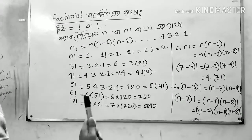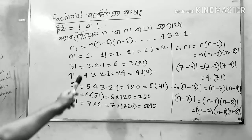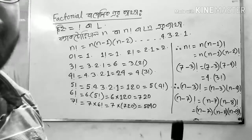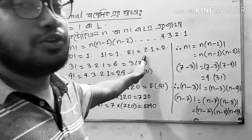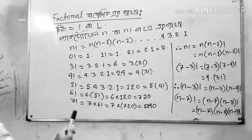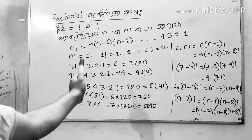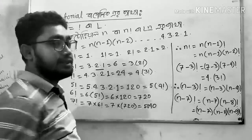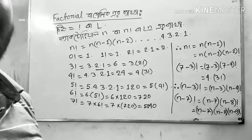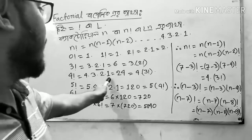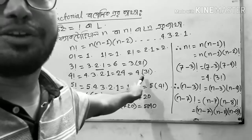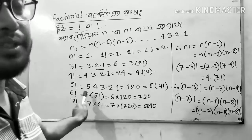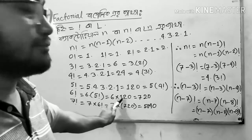N factorial. 0 factorial equals 1. 1 factorial equals 1. 2 factorial equals 2. 4 factorial equals 4 into 3 into 2 into 1 equals 24. 5 factorial equals 5 into 4 factorial. 6 factorial equals 6 into 5 factorial.